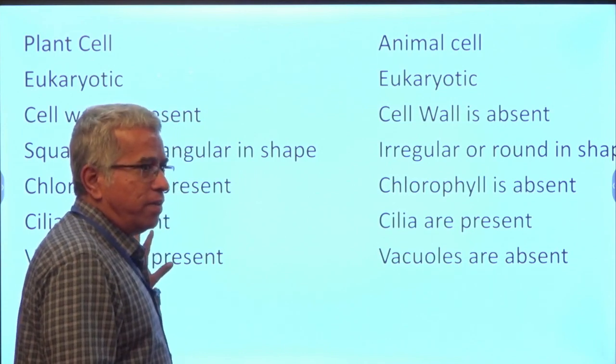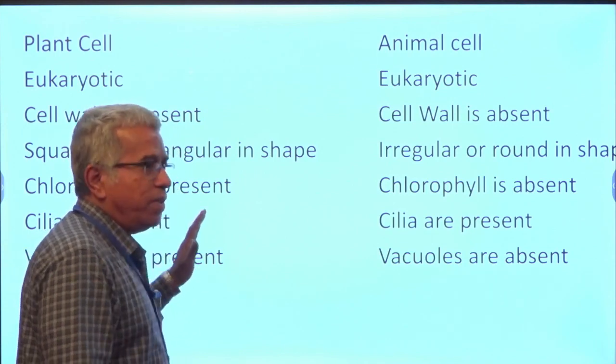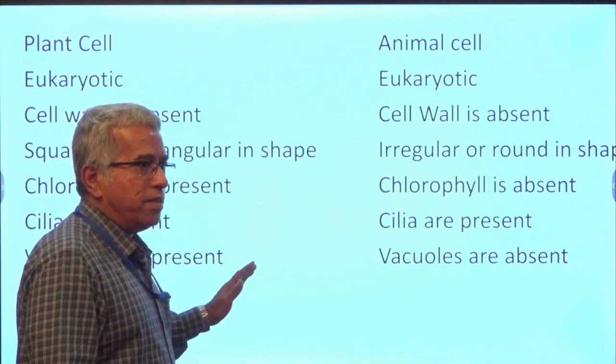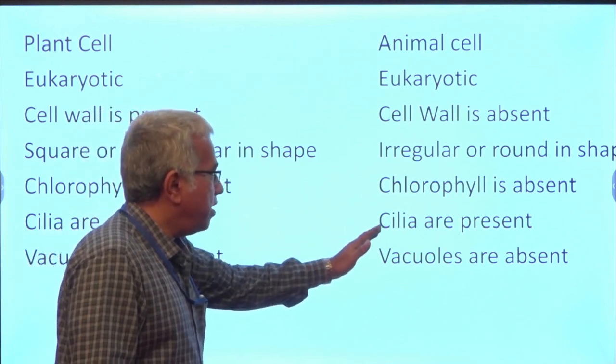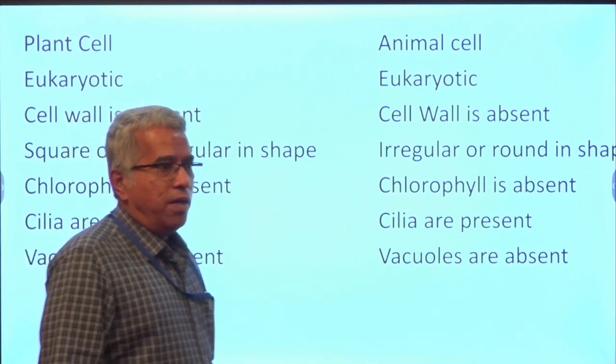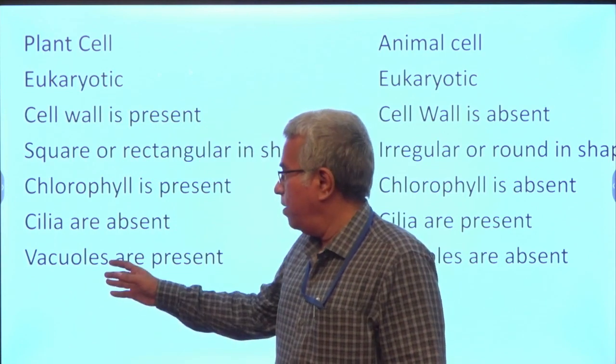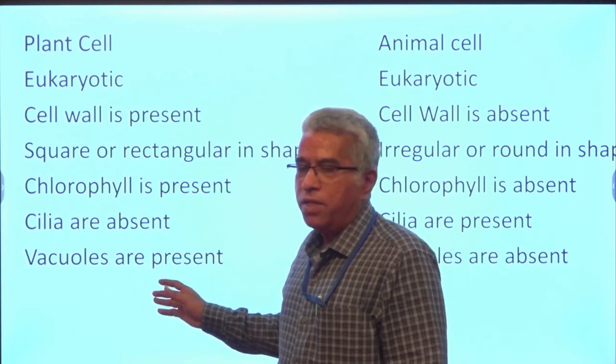Coming to cilia: cilia are absent in the case of plant cells, whereas cilia are present in the case of animal cells.